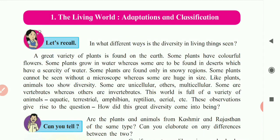In this chapter, we are going to learn three parts: the living world, adaptation, and classification. All living things make the living world, including humans, plants, animals, birds, and microorganisms. These all together form the living world.